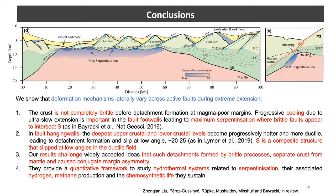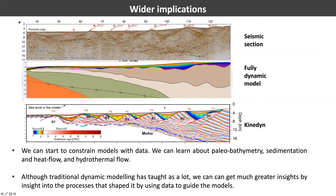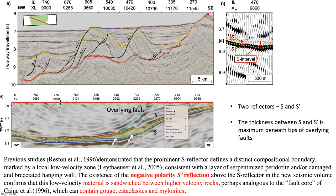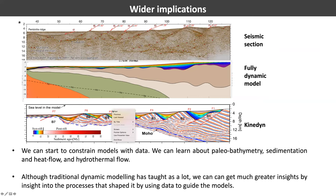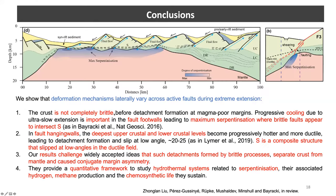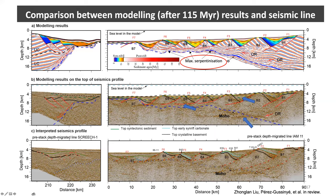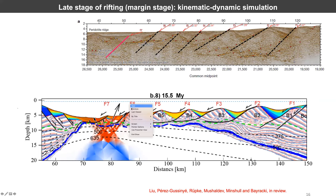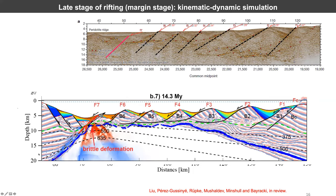I see that there is a question by Matilda. Matilda was wondering about the high strain visible all along the Moho throughout the model, most visible in slide 13, and whether it meant that serpentinization was occurring there.